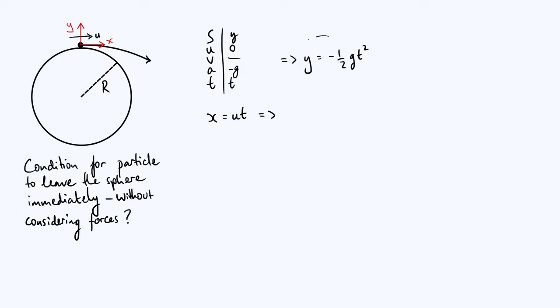And then we can rearrange that for t and substitute it into our equation for y to get y in terms of x. And if you do that, you'll find that y is equal to minus g x squared over 2u squared, because t is just x over u. Now here's where things start to get interesting.